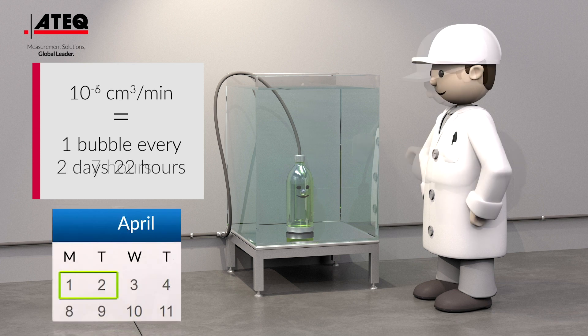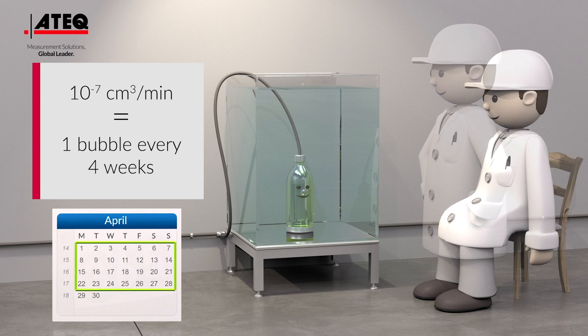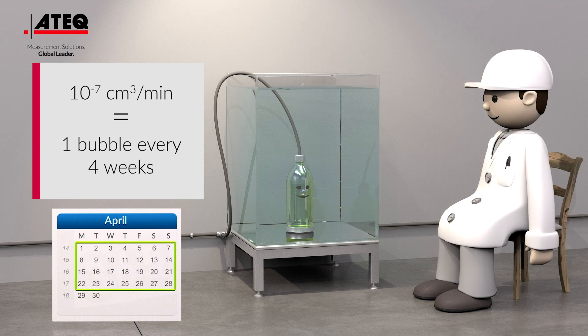10 to the negative sixth cubic centimeters per minute equals 1 bubble every 2 days and 22 hours. 10 to the negative seventh cubic centimeters per minute equals 1 bubble every four weeks.